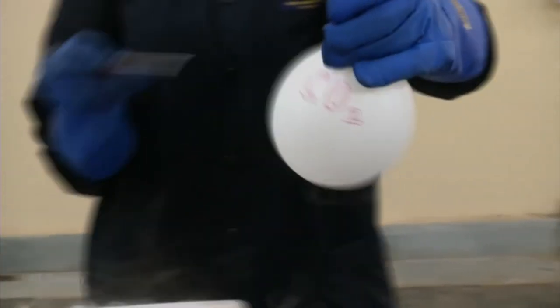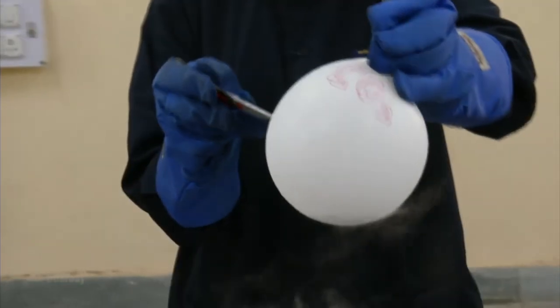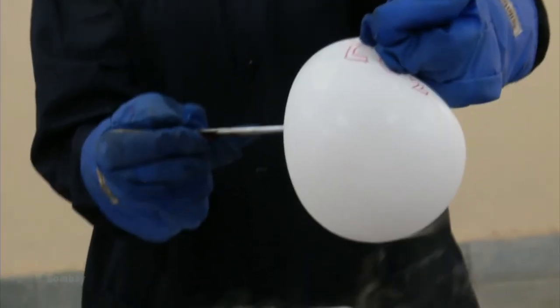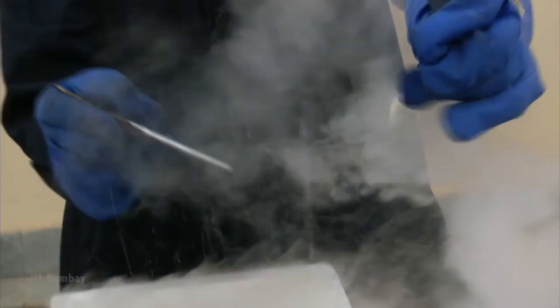CO2 solidifies around minus 80 degrees centigrade, and now I can just show you the solidified CO2 powder which you can see here.